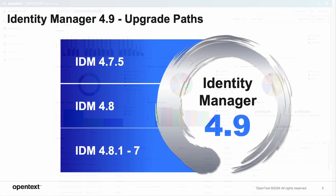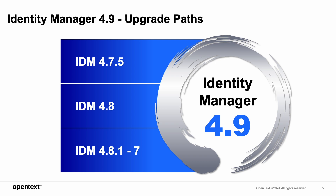To upgrade to Identity Manager 4.9, you must first be on one of these newer versions of Identity Manager. If you are on an earlier version, you will need to first upgrade to 4.7.5 or higher before moving to 4.9.